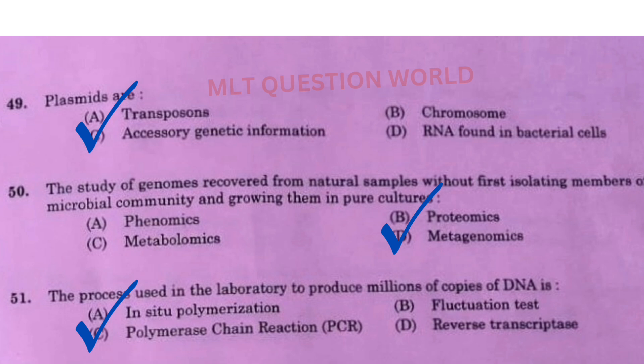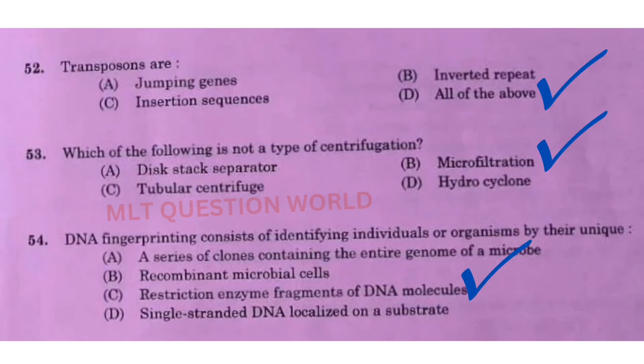Next one: The process used in the laboratory to produce millions of copies of DNA is? The right answer is PCR, or polymerase chain reaction. Next question: Transposons are? The right answer is option D, all of the above. Next question: Which of the following is not a type of centrifugation? The right answer is option B, microfiltration.